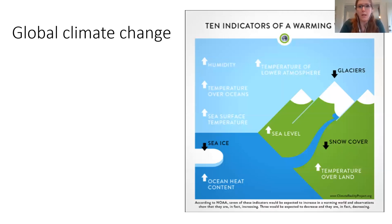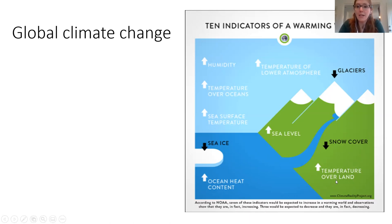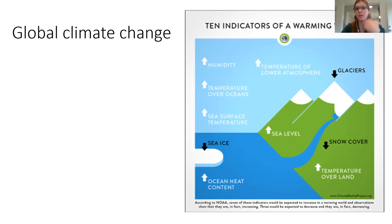The big one: global climate change. It's impossible to talk about threats to biodiversity without talking about climate change. The reason the term has shifted from 'global warming' is that it's not just that we'll see a warming climate — we're going to see changes in many things: decrease in glaciers, increased temperature, increased humidity, increased sea surface temperature, decreased sea ice, increased sea level, increased natural disturbances, wildfires, and increased drought. That's why this is now called climate change — it's going to impact a whole bunch of different things. This isn't just being a little warmer.